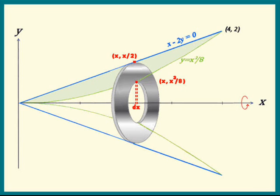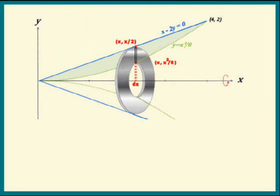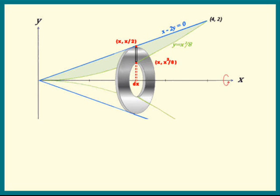Now we have all the information we need to set up the volume of the washer. The volume of the washer is equal to the volume of the big disk minus the volume of the small disk. We get pi R squared times the thickness, where the big R denotes the big radius, minus pi r squared times the thickness, where the small r is used to denote the small radius.